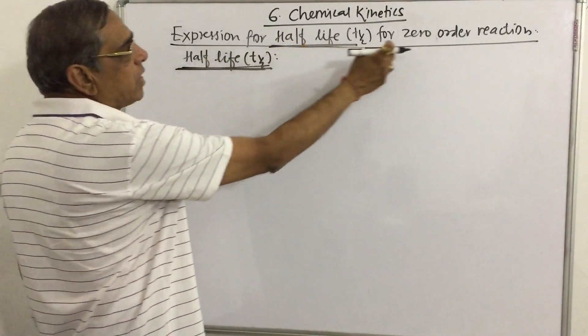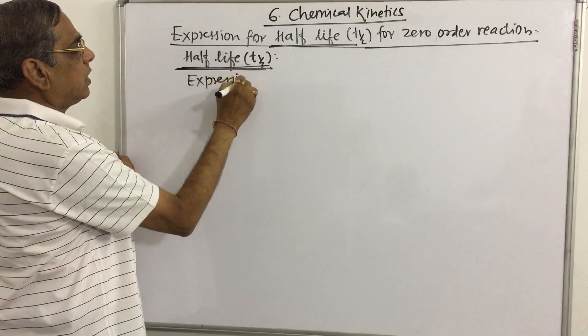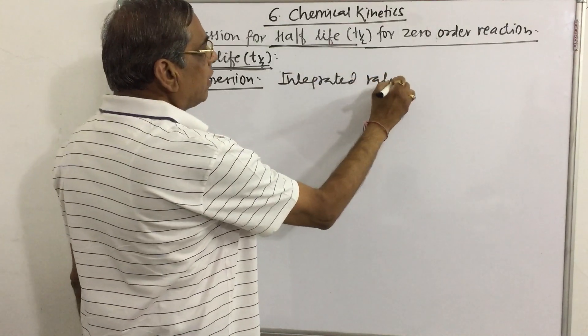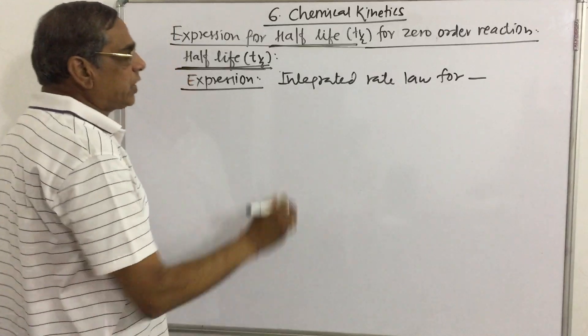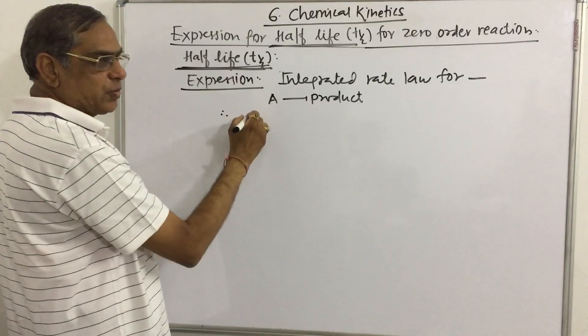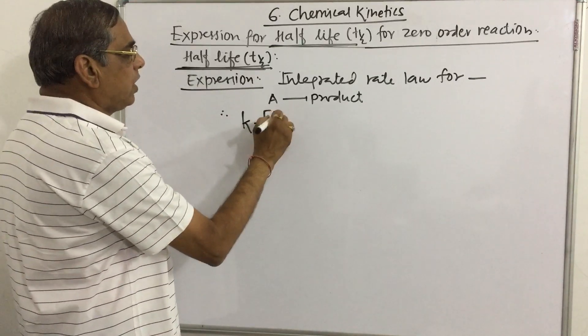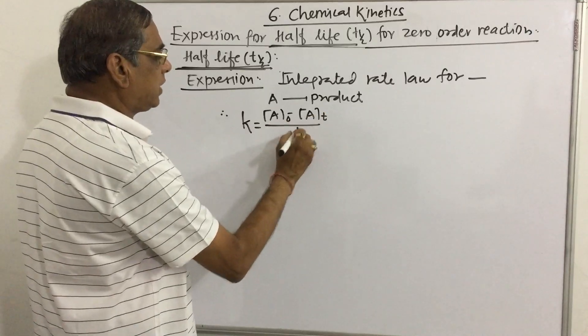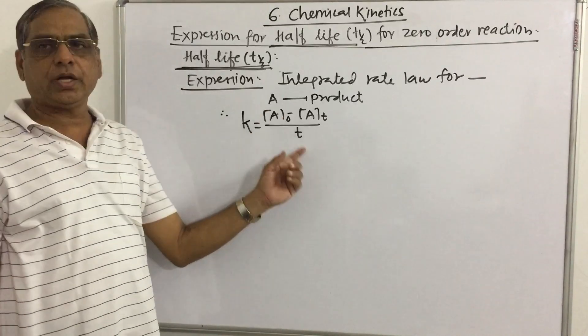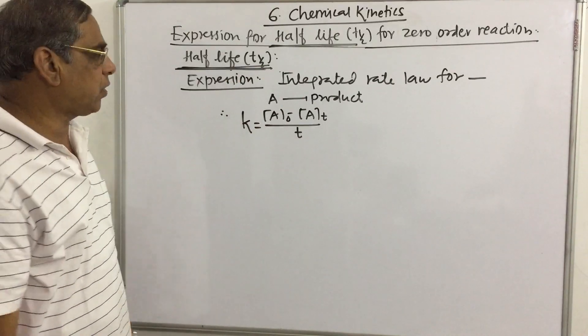Now, let us study the half-life for the zero-order reaction expression. First, you have to write the integrated rate law for the simple hypothetical reaction A → product. Last lecture we already studied, what is the integrated rate law? k = (A₀ - Aₜ)/t. So k is the rate constant, A₀ means initial amount when time t = 0, Aₜ is the amount left or concentration left after time t, and t is the time required. But when